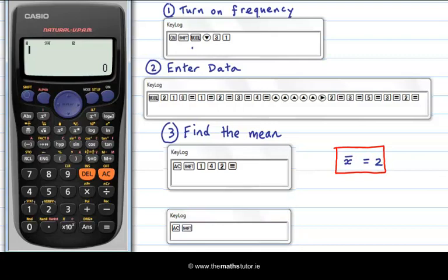We hit shift and one brings up this menu. Number four again for var. And this time we want option three for sigma X which is the standard deviation. And we hit equals. And we get 1.211.